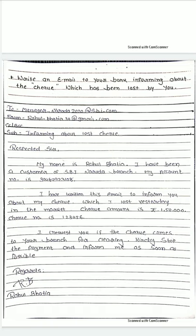For the second paragraph — the main body — what you want to write: 'I have written this email to inform you about my check which I lost yesterday in the market. The check amount is rupees 1,50,000. The check number is 1,23,456.' That is the second paragraph, with all details about the lost check.